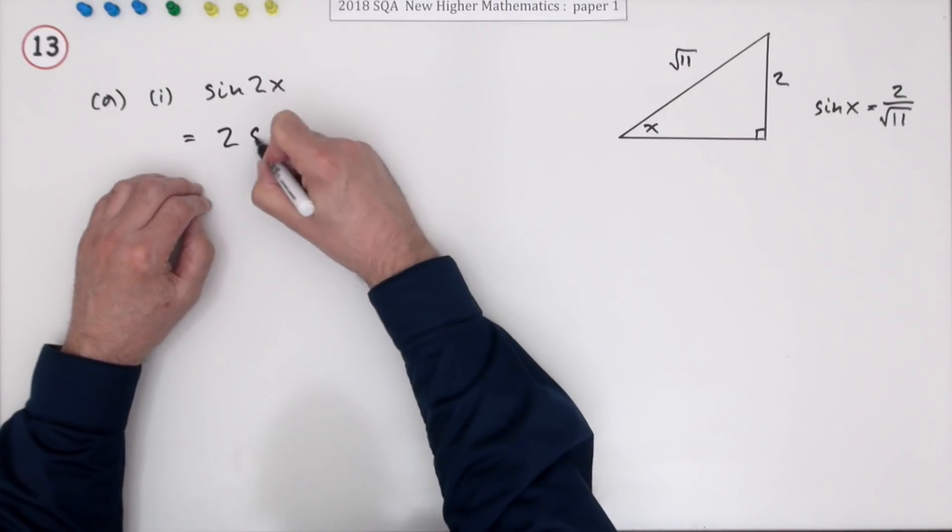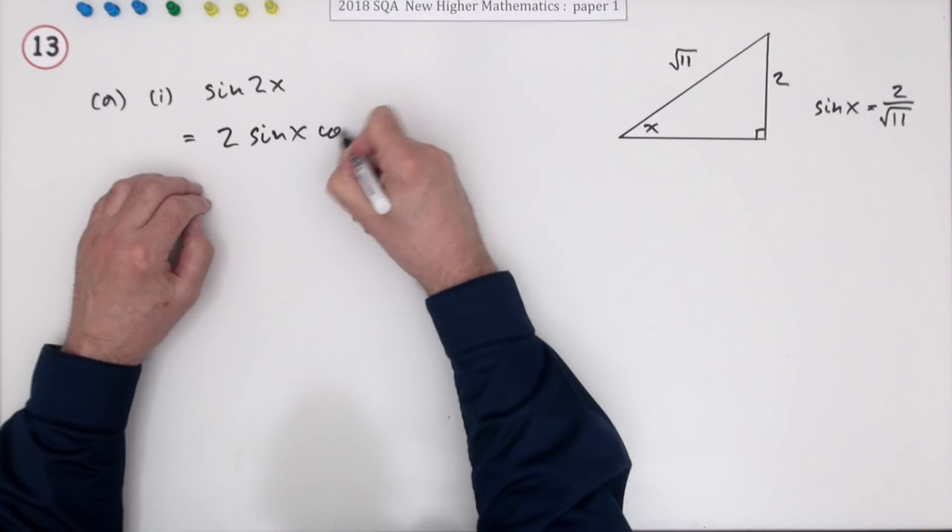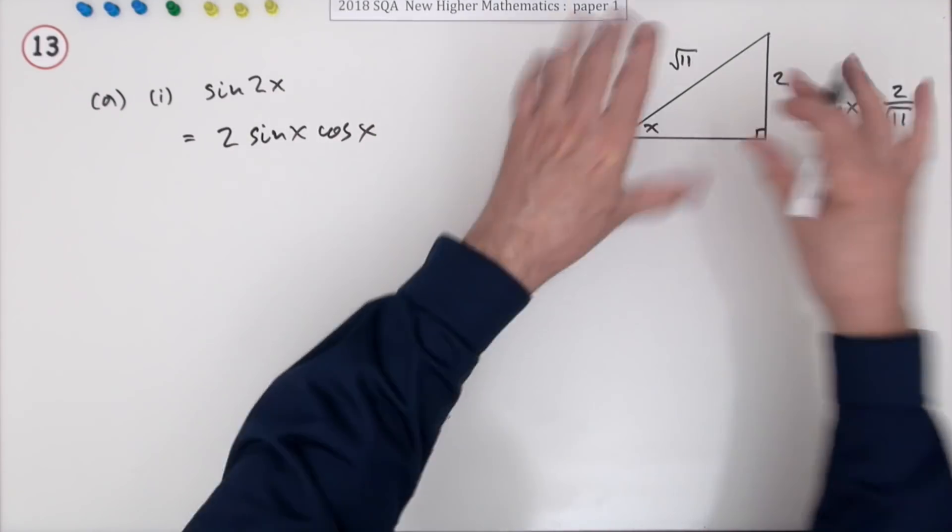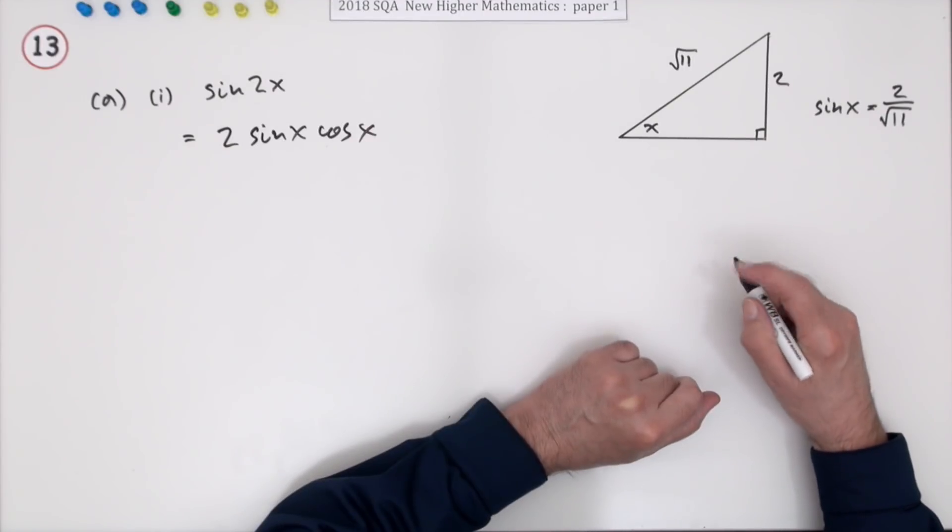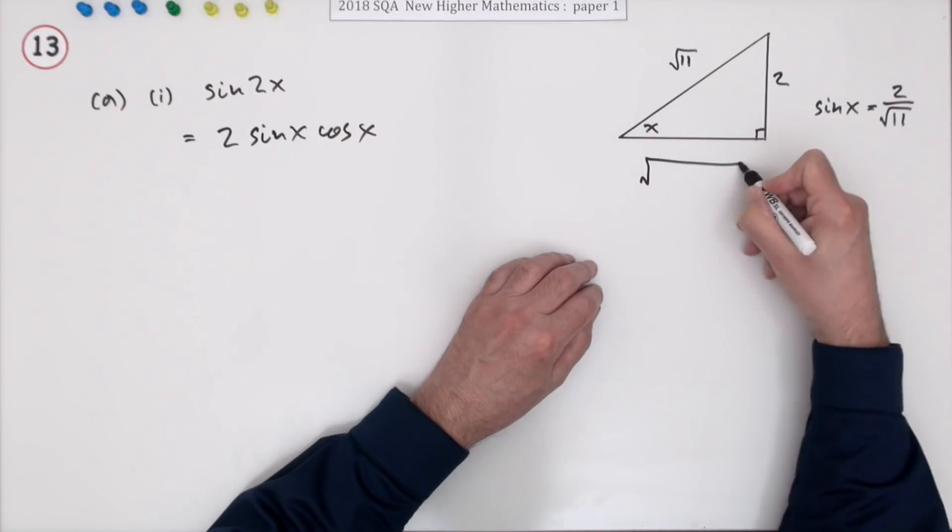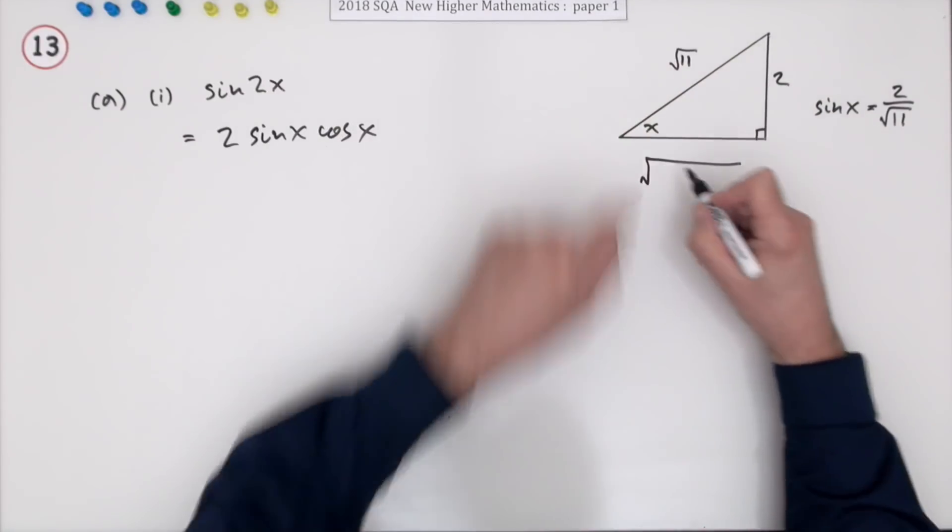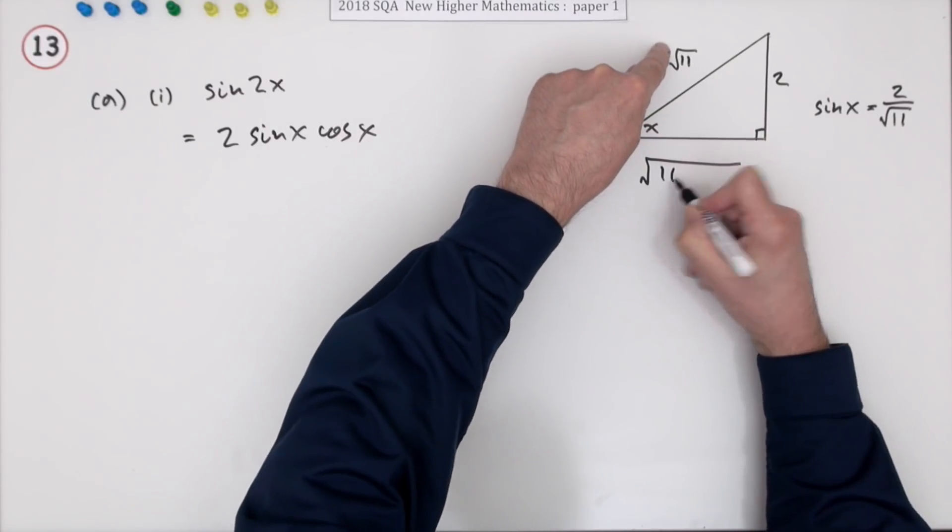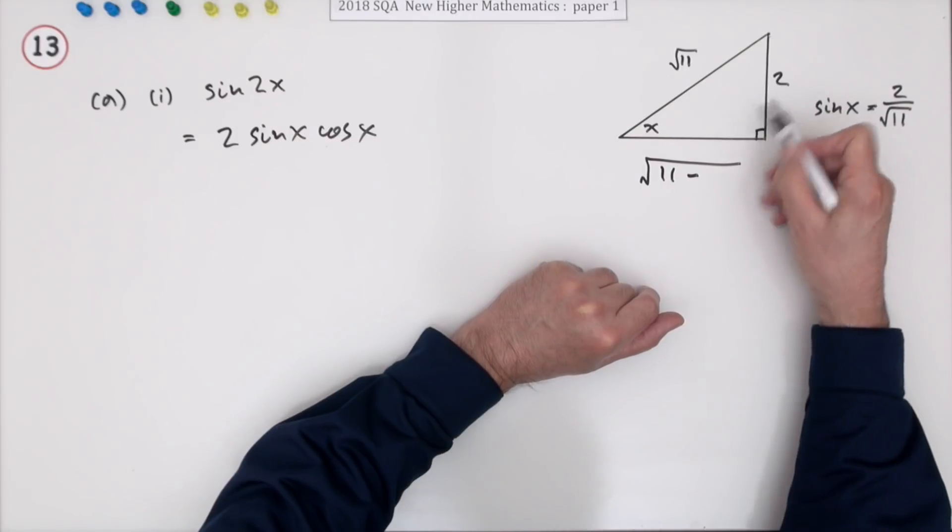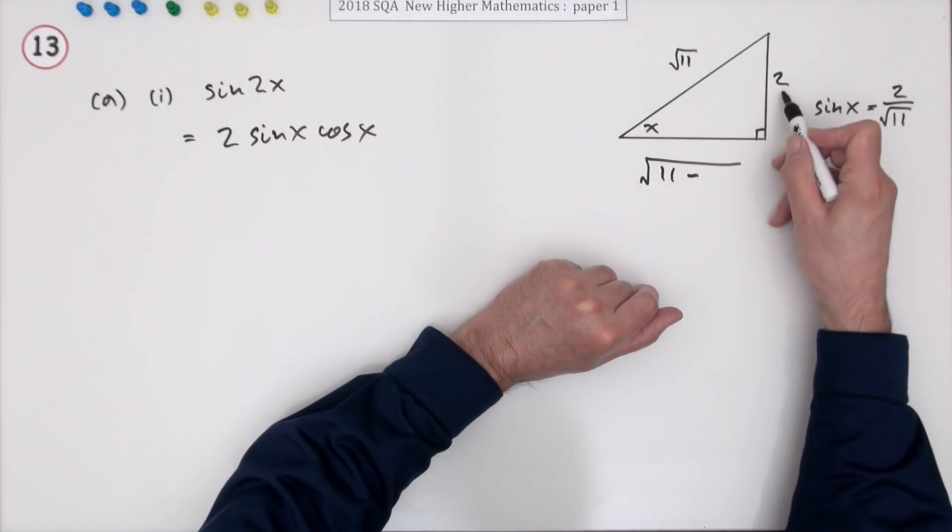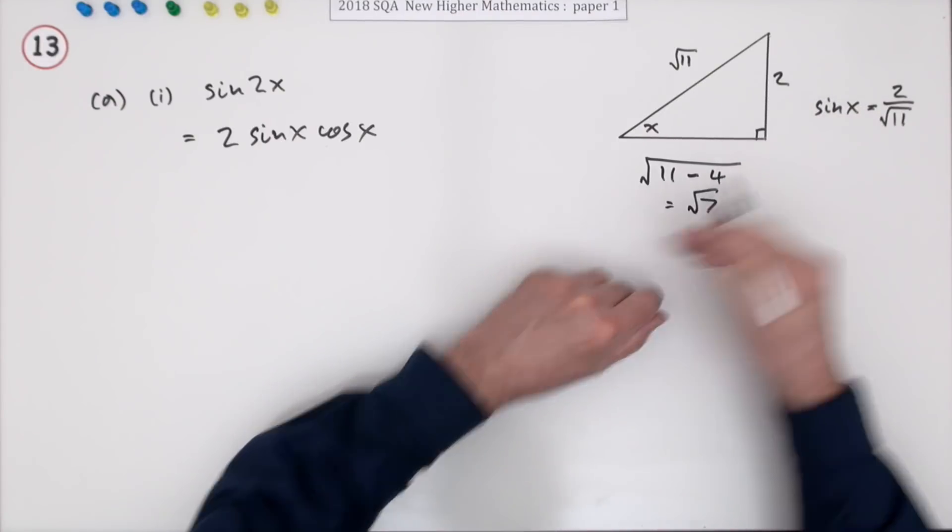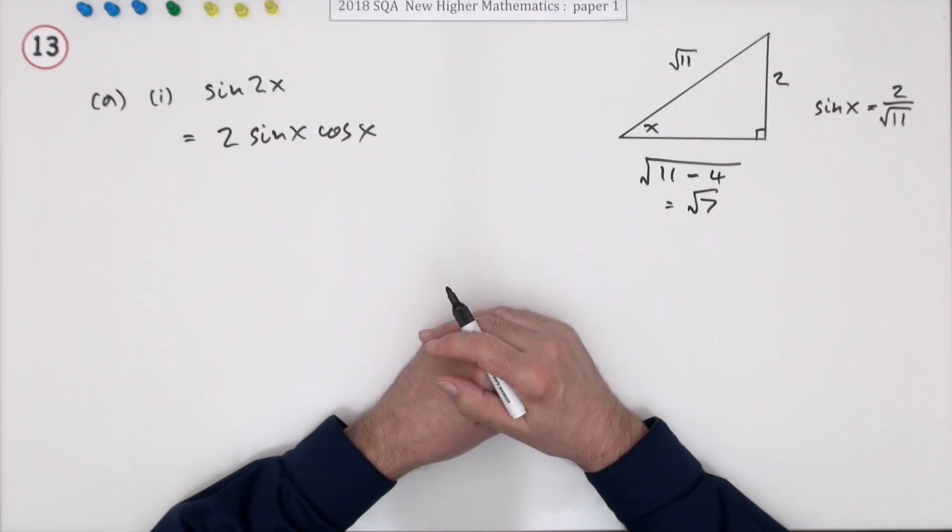So you've got sine 2x is 2 sine x cos x. Now that means I do indeed need cos x. So we go to the triangle. I need to find this third side here. If I just put the working down here, it would be the square root of this squared take away that squared. The square root of 11 reconstitutes the 11, minus, because this is a shorter side that has to be the biggest. Square of 2 is 4, so this side is root 7. There's no mark for that.